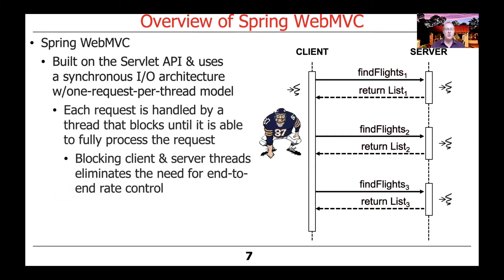One of the consequences of this — and there are several — is a positive one: when we have blocking client threads and blocking server threads, that eliminates or minimizes the need for end-to-end rate control, because it's naturally rate limited by the request-response nature of the interaction.